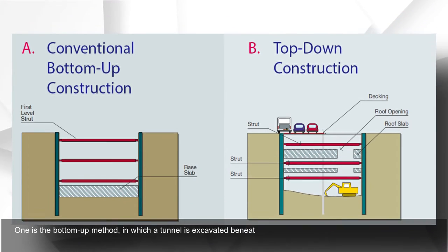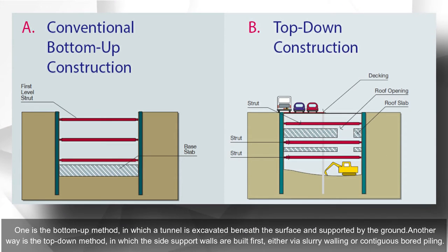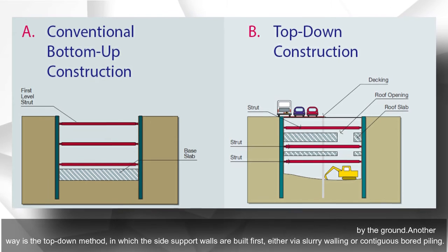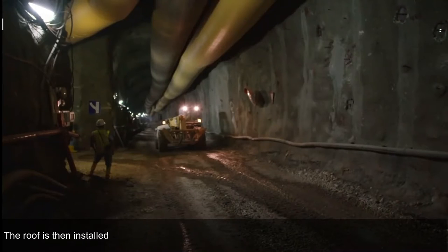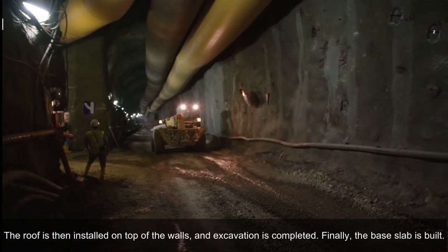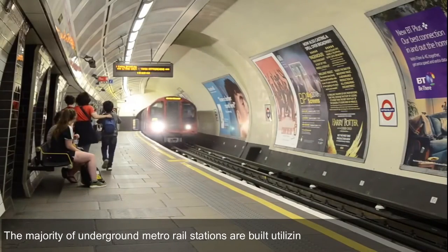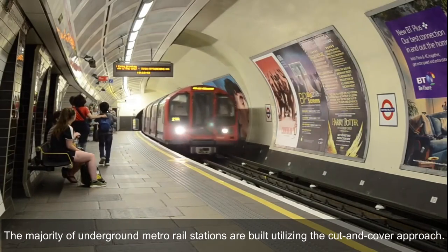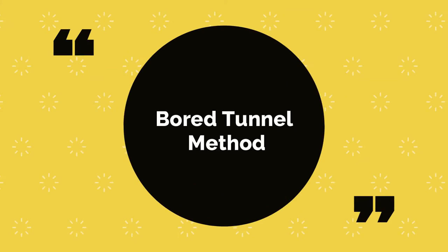The first is the bottom-up method, in which a tunnel is excavated beneath the surface and supported by the ground. The second is the top-down method, in which side support walls are built first, either via slurry walling or contiguous board piling. The roof is then installed on top of the walls, excavation is completed, and finally the base slab is built. The majority of underground metro rail stations are built using the cut and cover approach.